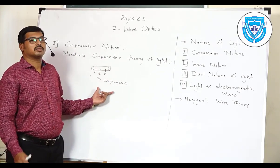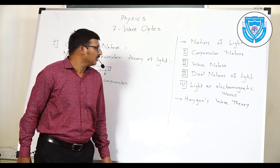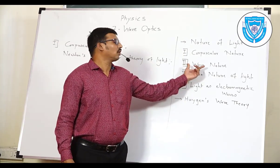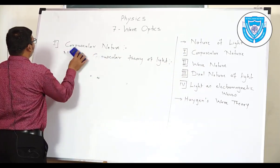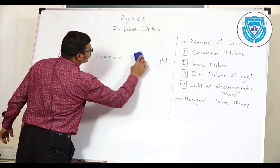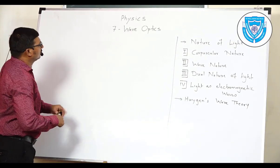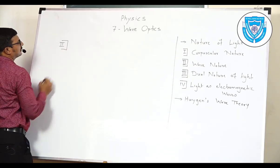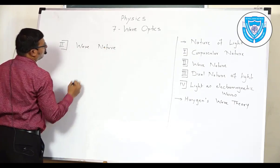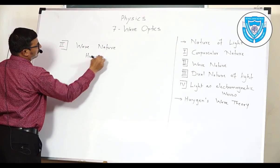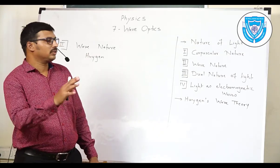This theory was accepted for several years, but in the same era, another scientist gave the second theory called the wave nature or wave theory of light. Let us see the second part of the nature of light — the wave nature. In that same era there was another scientist named Huygens, who gave some assumptions about light, with certain key points.